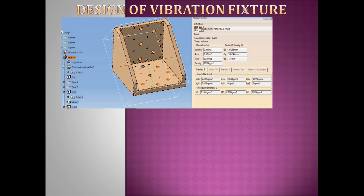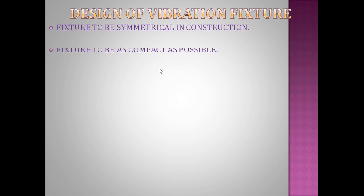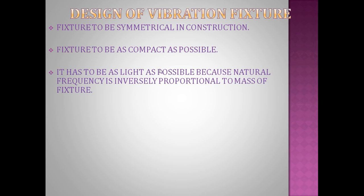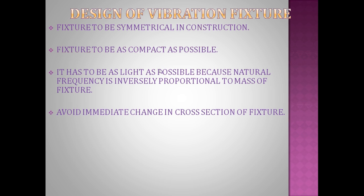The design guidelines are as follows. First, the fixture must be symmetrical in construction — both sides should be symmetrical with reference to each other. Second, the fixture must be as compact as possible. Natural frequency is inversely proportional to mass, and as height increases the natural frequency decreases, so it must be as compact and as light as possible.